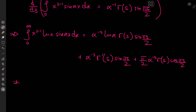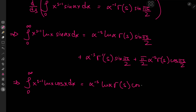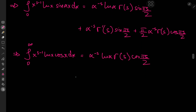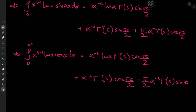By a similar token, the integral from 0 to infinity of x to the s minus 1 times log(x) times cosine(alpha*x) dx equals alpha to the negative s times log(alpha) times gamma(s) times cosine(pi*s/2), plus alpha to the negative s times gamma'(s) times cosine(pi*s/2), minus (pi/2) times alpha to the negative s times gamma(s) times sine(pi*s/2). The negative sign appears because the derivative of cosine is negative sine. Okay, cool — that was fun. But now what?